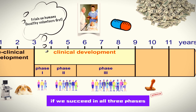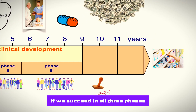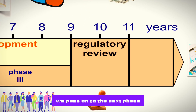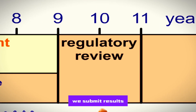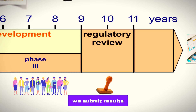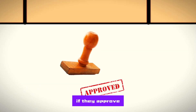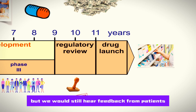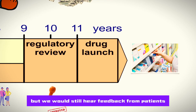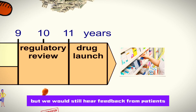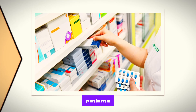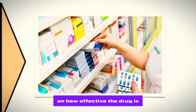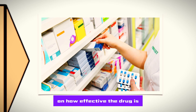If we succeed in all three phases, we pass on to the next phase where we submit the results to the drug association. If they approve, then we will release the drug into the market. But we would still hear feedback from patients, pharmacists, and doctors on how effective the drug is.